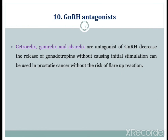The last subclass is gonadotropin-releasing hormone antagonists. Examples are cetrorelix, ganirelix, and abarelix. These antagonists decrease the release of gonadotropin without causing initial stimulation and can be used in prostatic cancer without the risk of a flare reaction. This concludes the discussion of all ten subclasses of hormonal therapy.